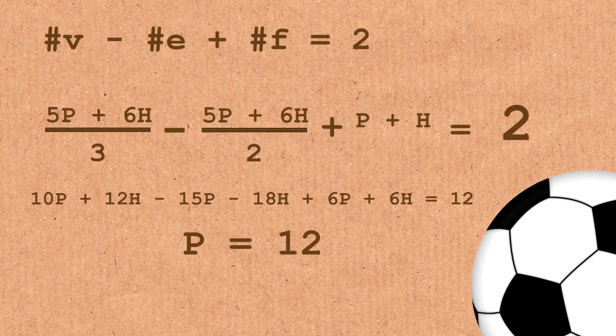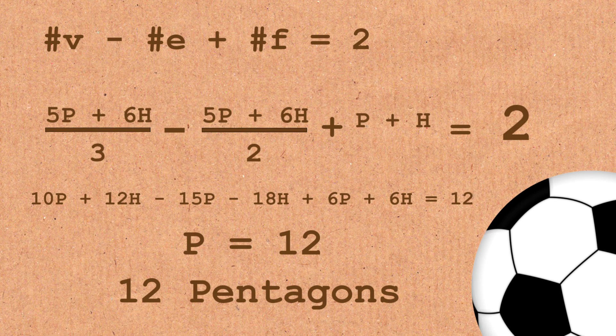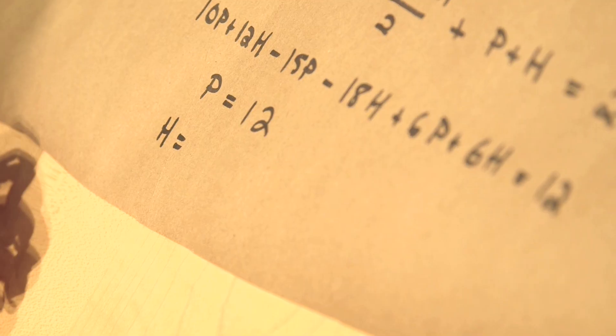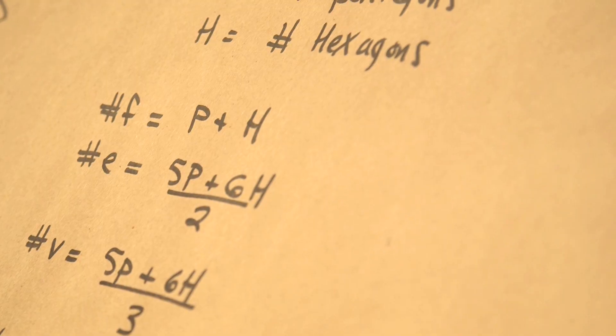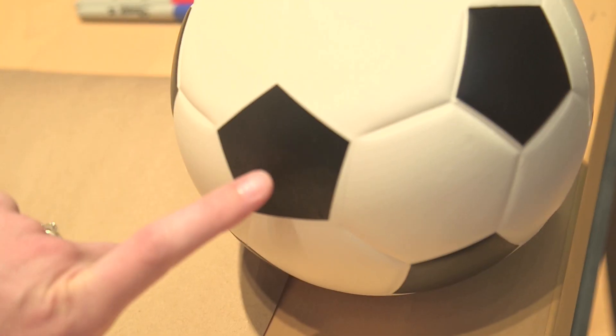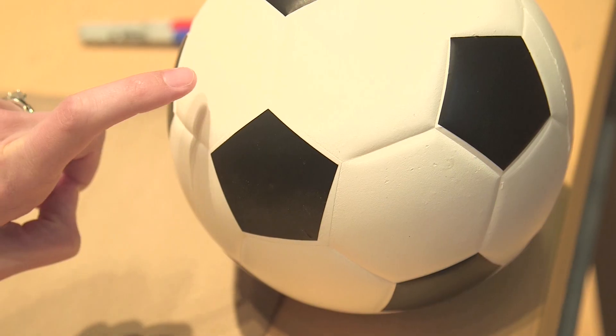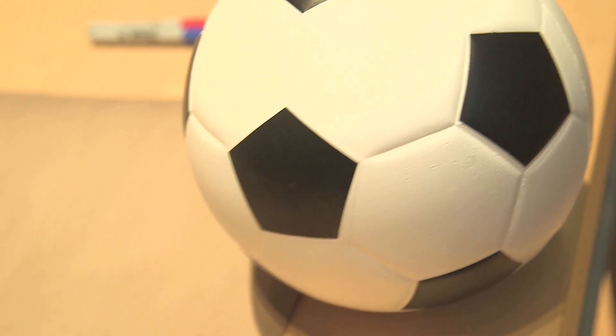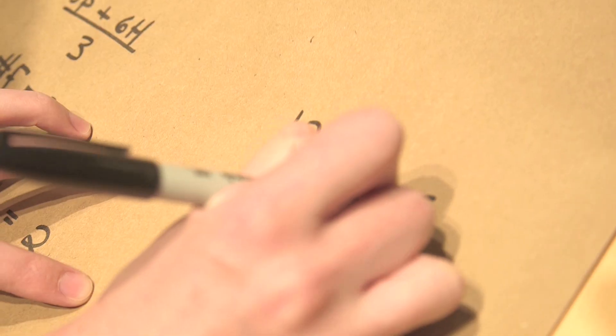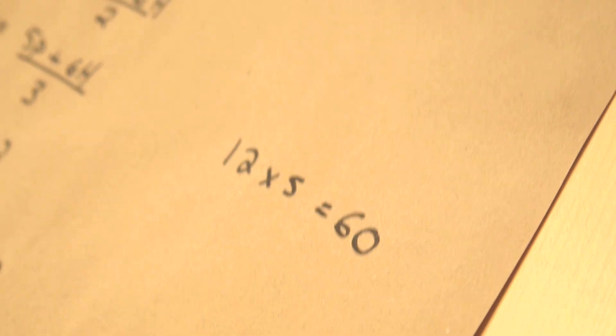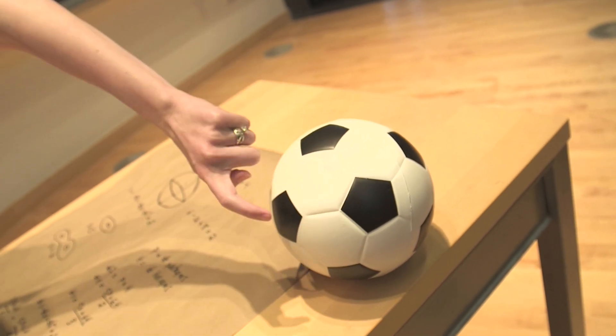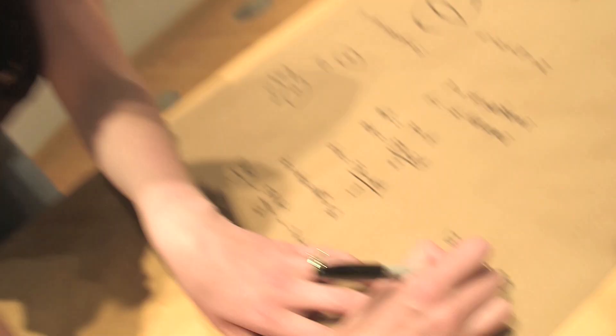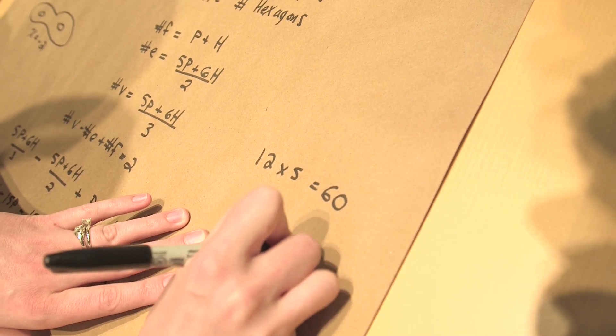So what did we just learn? We just showed that there have to be 12 pentagons on our soccer ball. And it follows from that, that with this standard pattern that we have on soccer balls, that there are going to be 20 hexagons. Where did that come from? So where it comes from, if we look at our soccer ball, is that each pentagon is surrounded by five hexagons, right? So if we have 12 pentagons times five is 60, except it's one of these over counting things again. So like this hexagon was counted around this pentagon, this pentagon, and this pentagon. So it was counted three times. So we divide that by three, and we get our 20 hexagons.